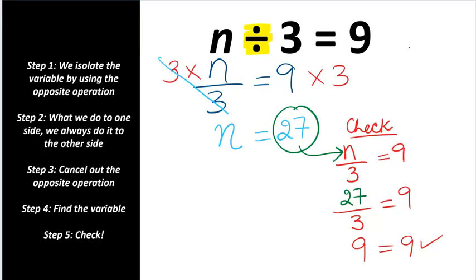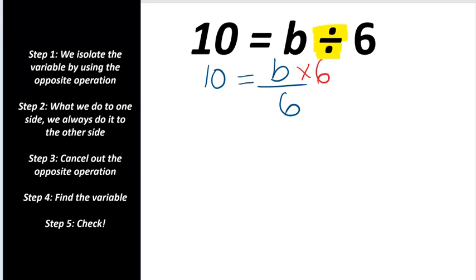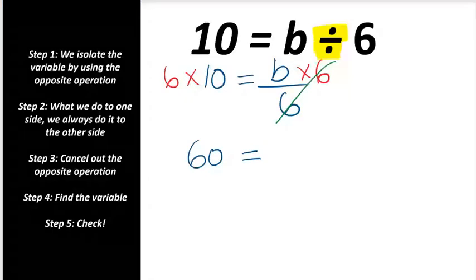Let's do another example. We have 10 equals b divided by 6. We need to isolate the variable by using the opposite operation. We are dividing the variable by 6, so the opposite of division is multiplication — we are going to times the variable by 6. What we do to one side, we must do to the other side. 6 times 10 is 60. So b times 6 and b divided by 6 just cancel each other out, and we are left with b equals 60.